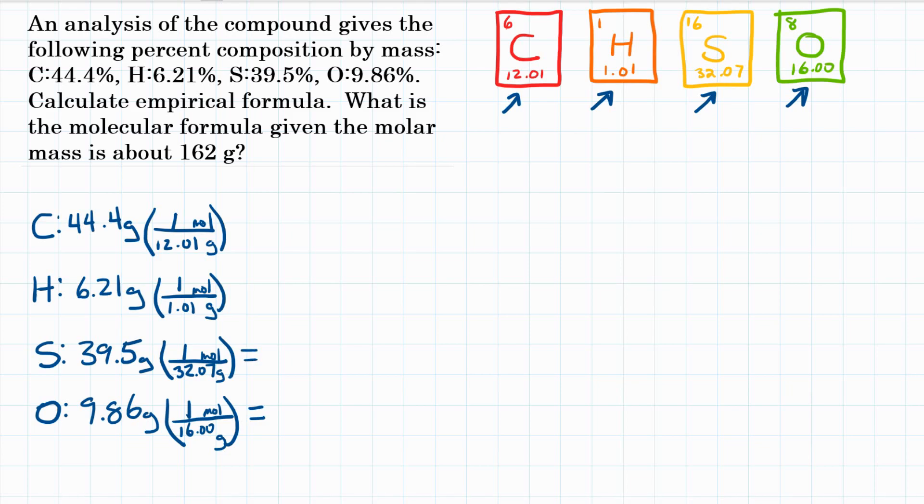So we need to solve all of these. In each instance, grams will go away. It's on top and the bottom. And we'll be left with moles. For carbon, 44.4 times 1 divided by 12.01. We'll get 3.697, and units are moles.